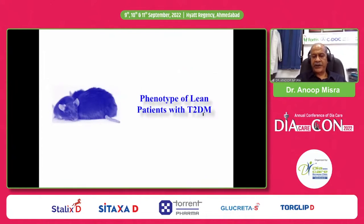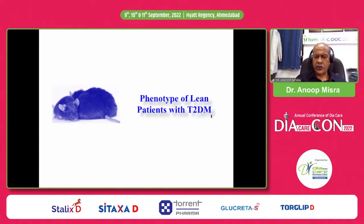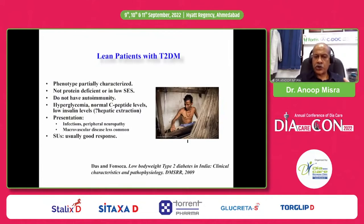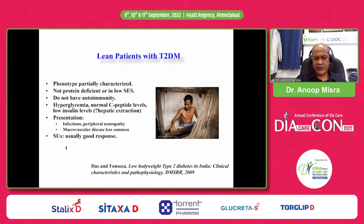The phenotype of lean patients with type 2 diabetes: we have talked about various syndromes of apparent type 2 diabetes whose etiology lies elsewhere. For true lean patients with type 2 diabetes, the phenotype is only partially characterized. They don't have protein deficiency or low socioeconomic strata, do not have autoimmunity. They have hyperglycemia with normal C-peptide levels and low insulin levels, possibly related to hepatic extraction of insulin. They present with infections, peripheral neuropathy, macrovascular disease less commonly, and sulfonylurea usually leads to good response. This needs further research.